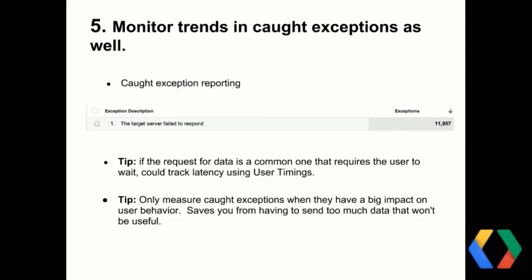A tip: you should probably only measure caught exceptions when they're having a big impact on user behavior. In the example I gave, the user is sitting there waiting for something to happen — that's important to measure because it directly impacts user experience. In other cases, you're catching exceptions all over the app for many different reasons. If they're not directly impacting the user's experience, I wouldn't recommend tracking them — you'll end up sending a ton of data and using more radio, which is bad for battery life, and it's not clear that data would be useful in reports.